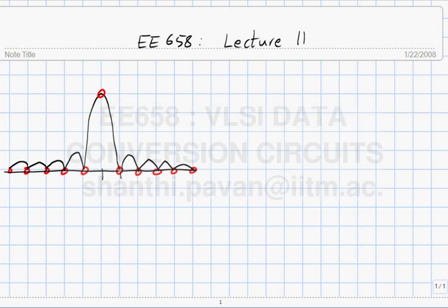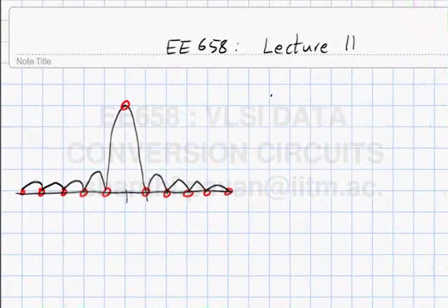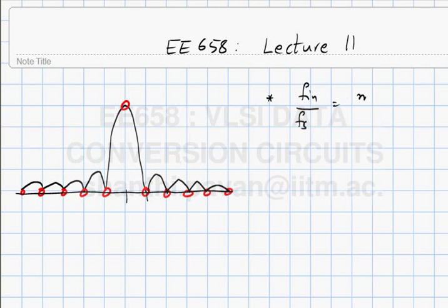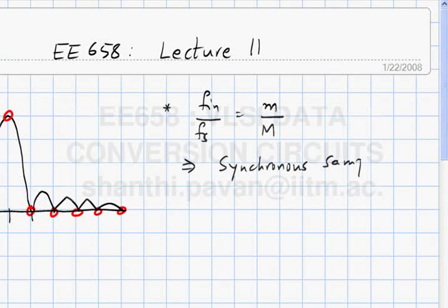This is an experiment you can do in about half a minute once you have MATLAB. So as I said, this is often called synchronous sampling or also coherent sampling, when F_in / F_s is of the form m / M.